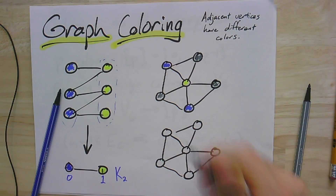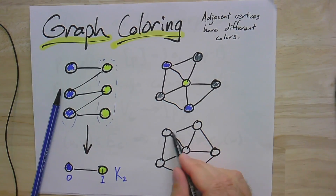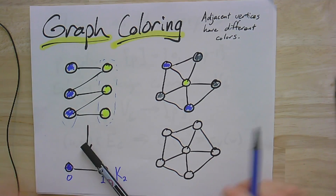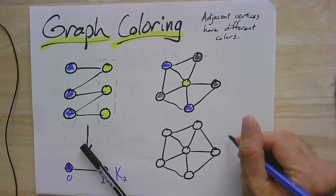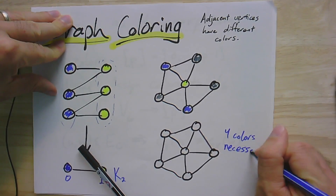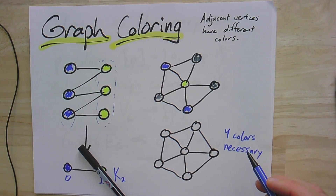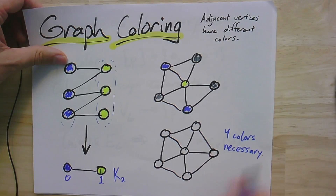This three-coloring worked with three colors. But what if I add another edge? With this extra edge, I think four colors will actually be necessary — you can't get away with just three. It's a good exercise to stop and prove that you actually need four colors here.